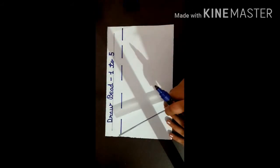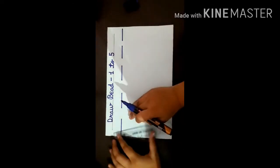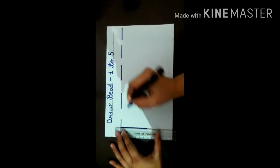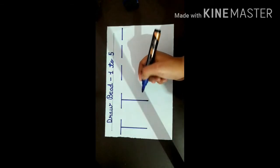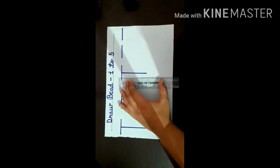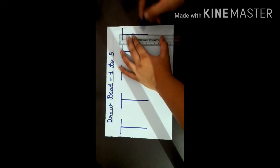See, 5 lines I have drawn 1, 2, 3, 4, and 5. Now 5 short lines 1, 2, 3, 4, and 5.